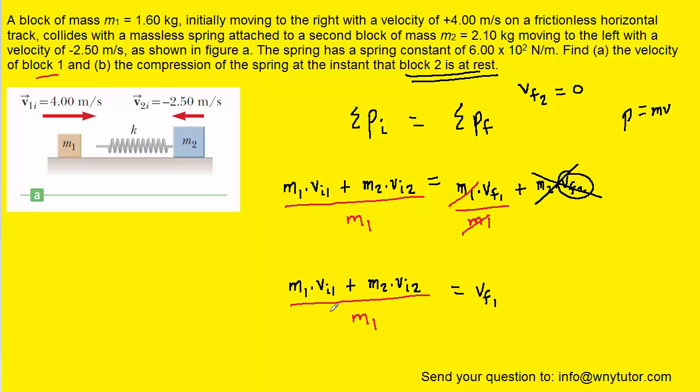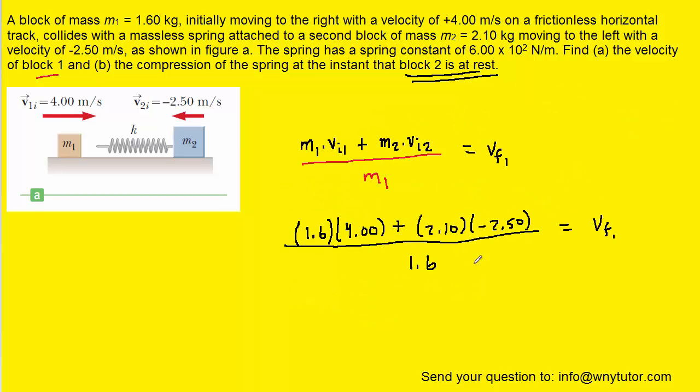At this point of the problem we can simply plug in the known values. m1 was stated as being 1.6 kilograms. m2 is stated to be 2.10 kilograms. The initial velocity of both blocks is given in the problem. It's also shown in the picture. Please be mindful that the initial velocity of block two is negative 2.5 meters per second because that block is moving to the left. So just make sure you include that negative sign for the initial velocity of block two. So I'll plug in all the known values. And when we simplify that we should get positive 0.719. And the unit will be meters per second since we're calculating velocity.